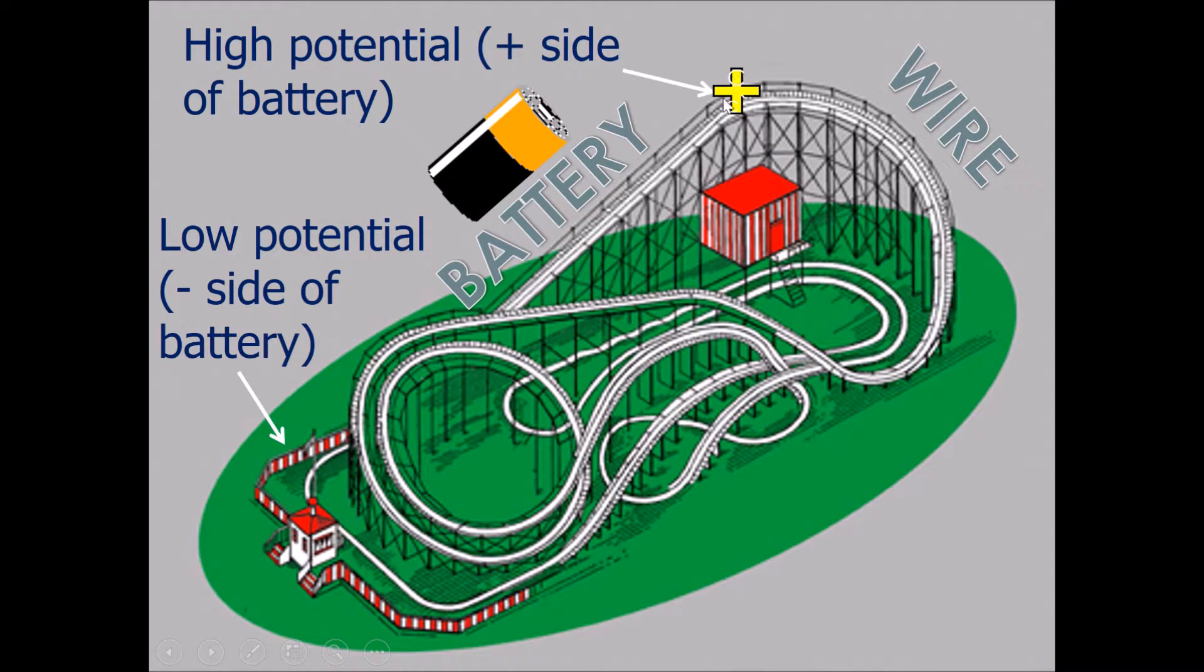This plus sign represents charges at the high potential area. Therefore, once it releases, it will actually roll down. And because of its potential, it will actually release this energy and allow itself to move to the low potential side of the battery.